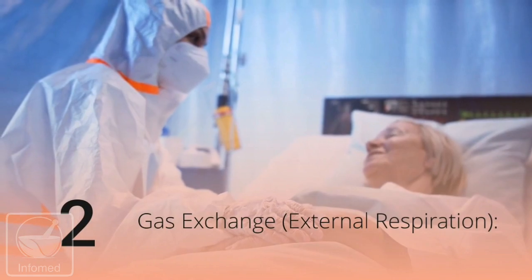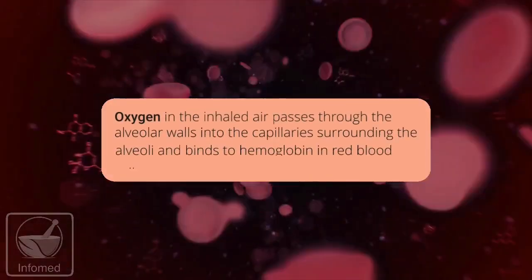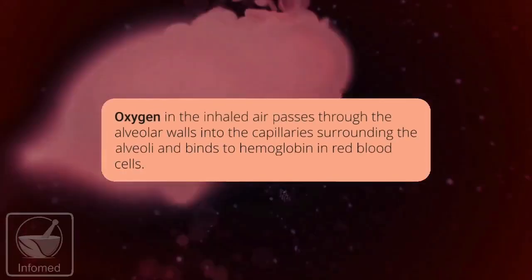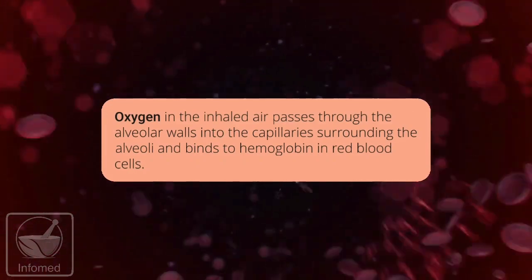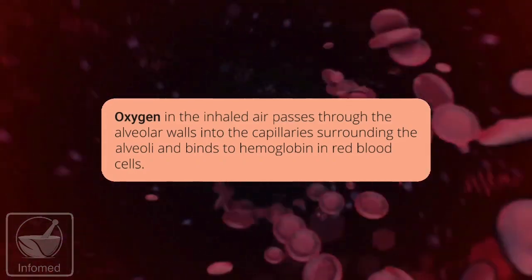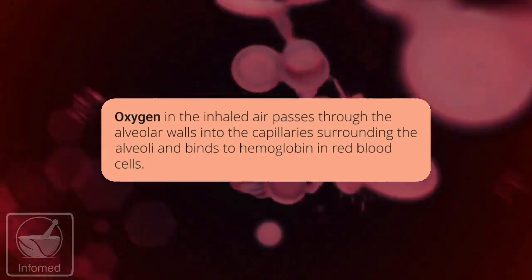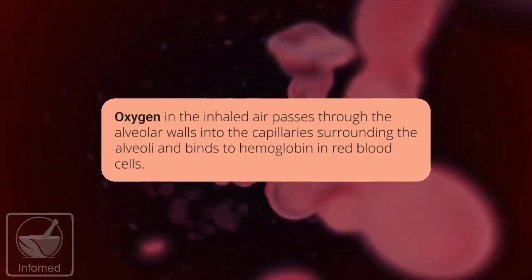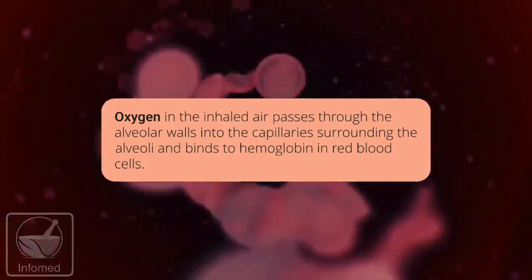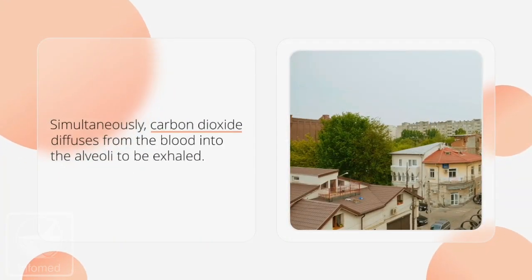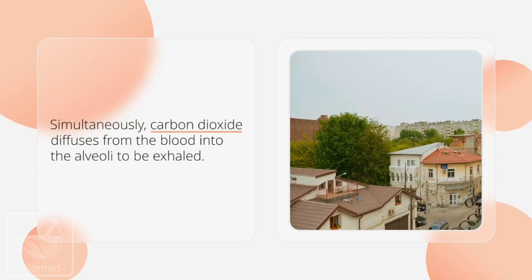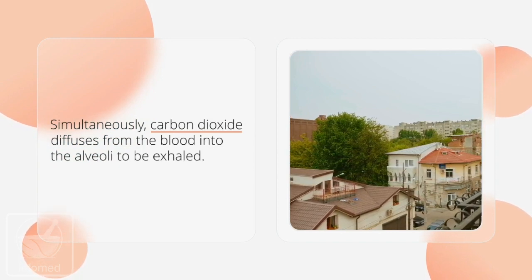Gas exchange: external respiration. Oxygen in the inhaled air passes through the alveoli walls into the capillaries surrounding the alveoli and binds to hemoglobin in red blood cells. Simultaneously, carbon dioxide diffuses from the blood into the alveoli to be exhaled.